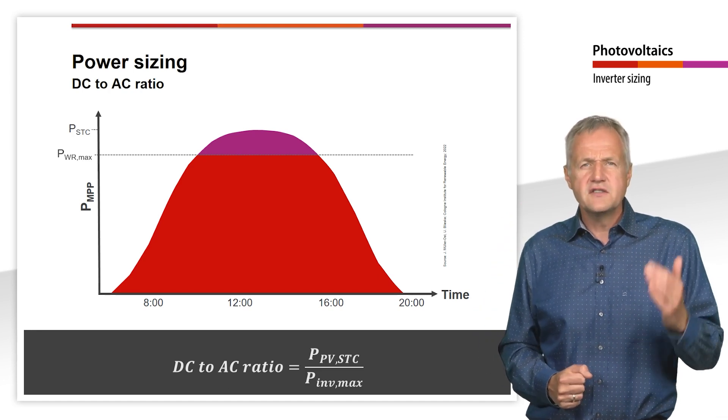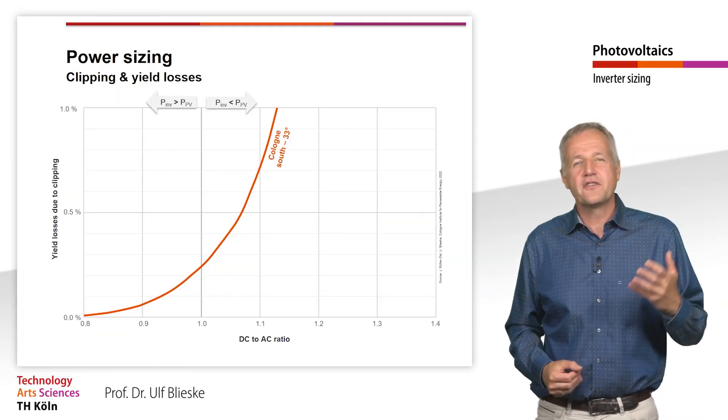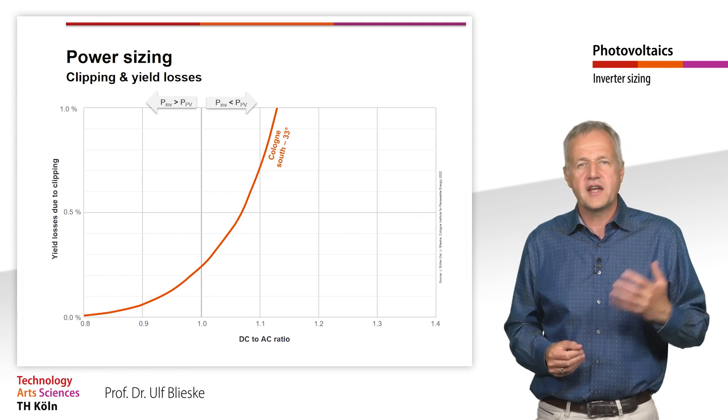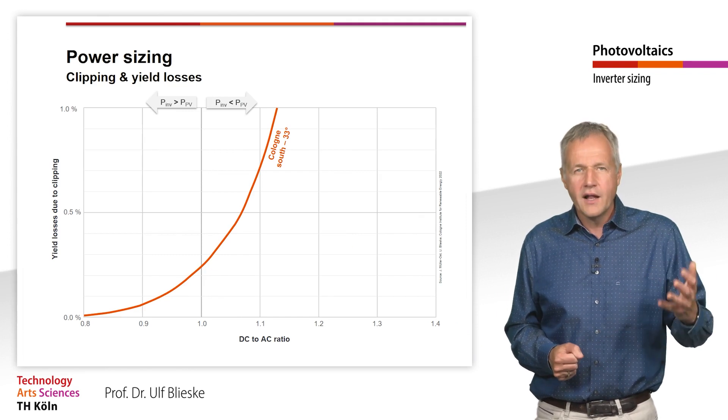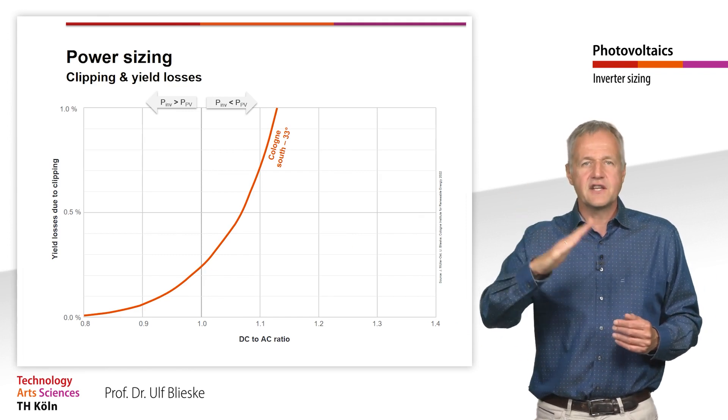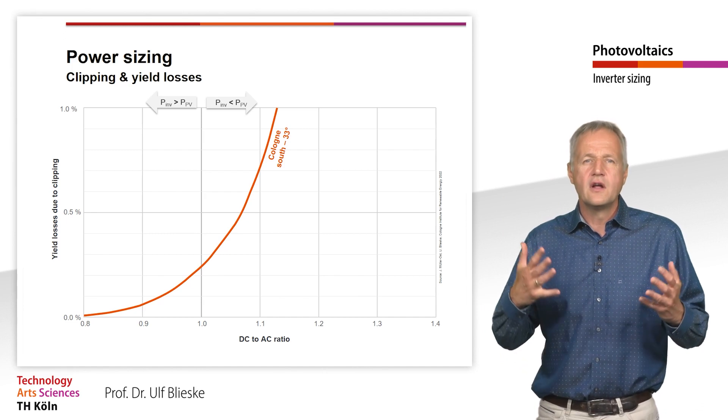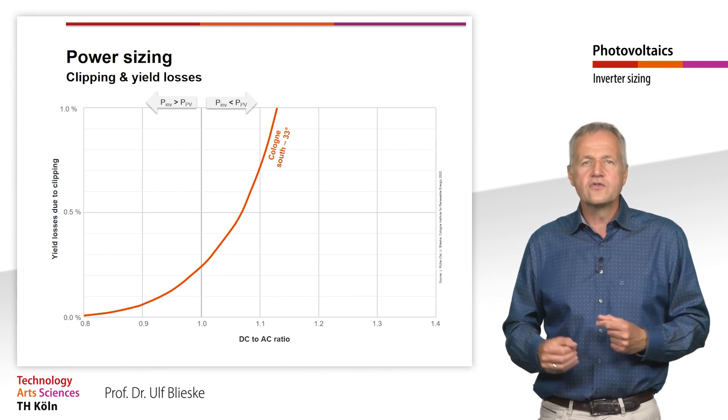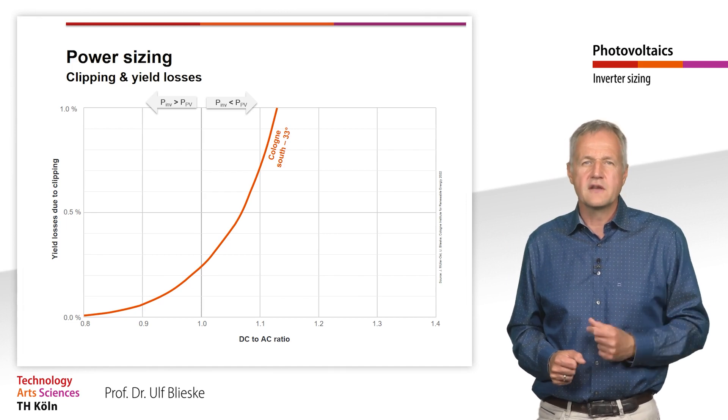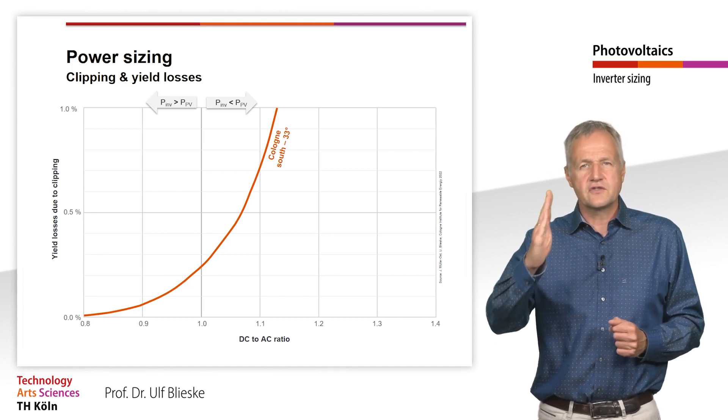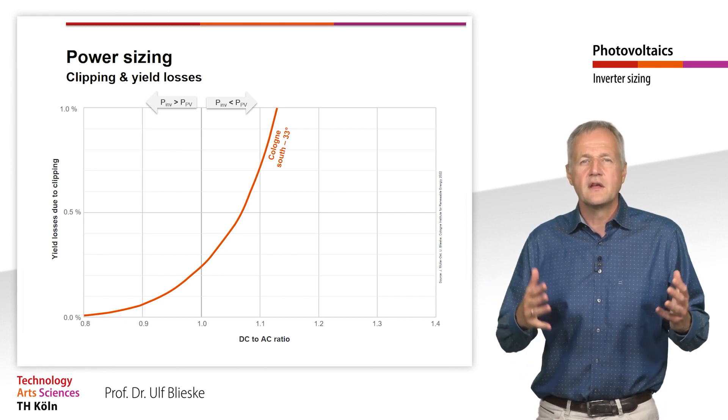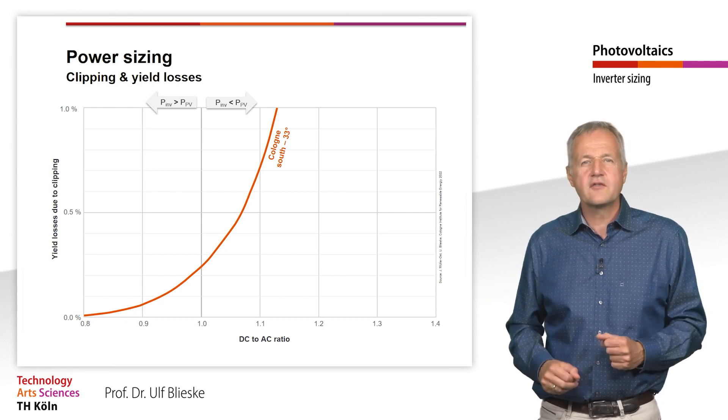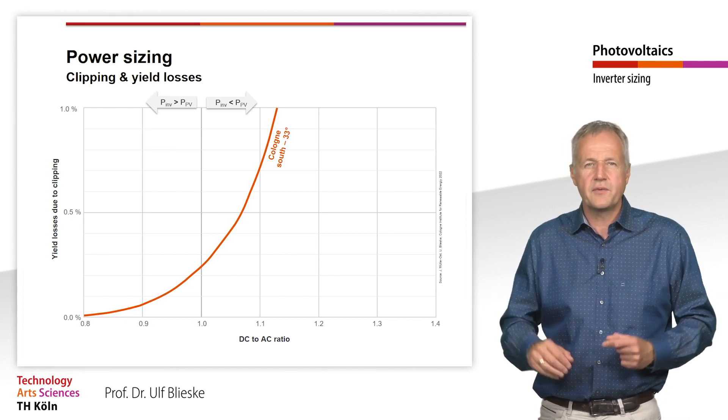But which DC to AC ratio is optimal? This question cannot be answered in general because the answer depends on the temperature and the irradiation conditions at the location as well as on the orientation and the inclination of the modules. Let's take a look at this using the example of a plant in Cologne, Germany, which is oriented to the south and has an optimal tilt angle of 33 degrees.